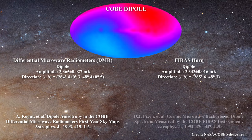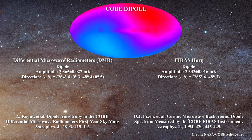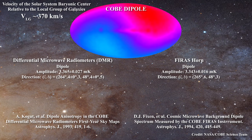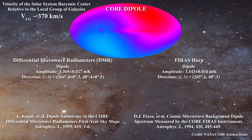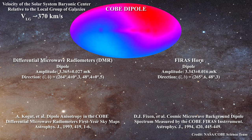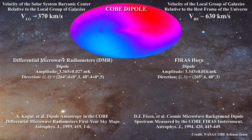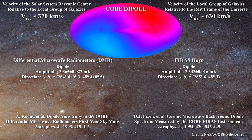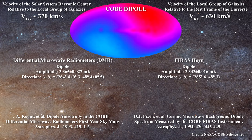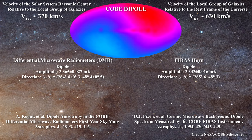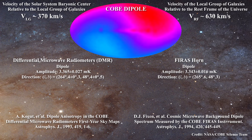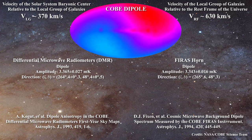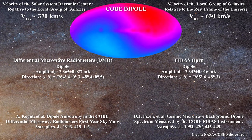The dipole is revealing that the solar system appears to have a velocity of approximately 370 km per second relative to the local group of galaxies. That implies also that the local group of galaxies has a velocity of about 630 km per second relative to the rest frame of the universe. The dipole can be thought of as a Doppler shift in the monopole signal which arises due to movement relative to the rest frame of the universe.